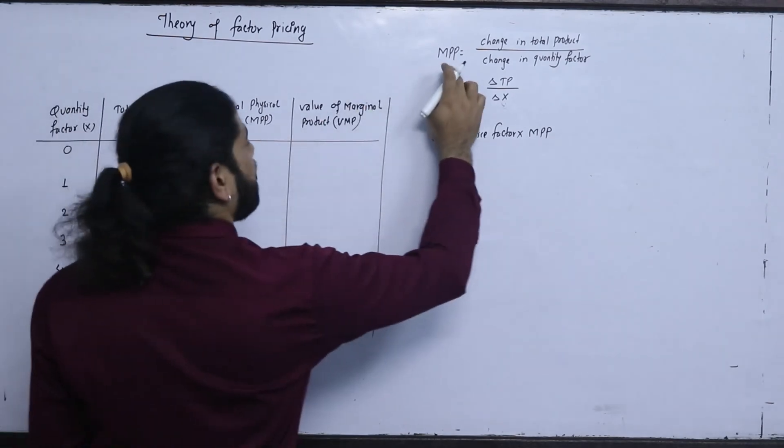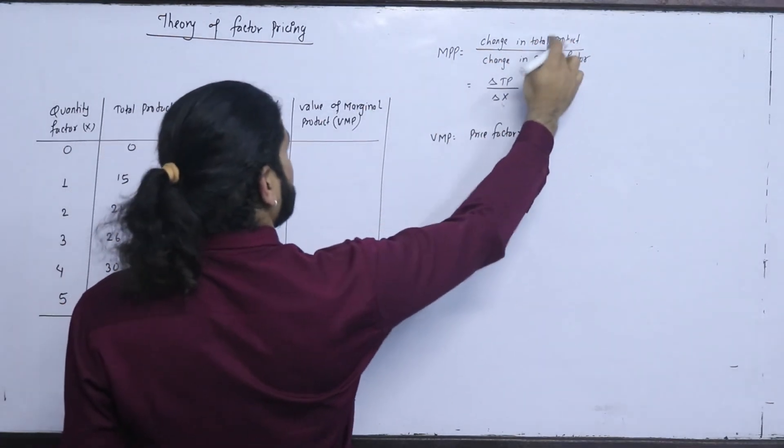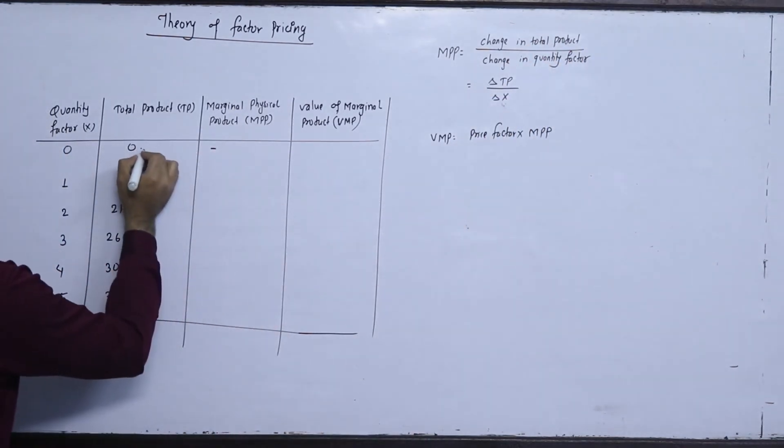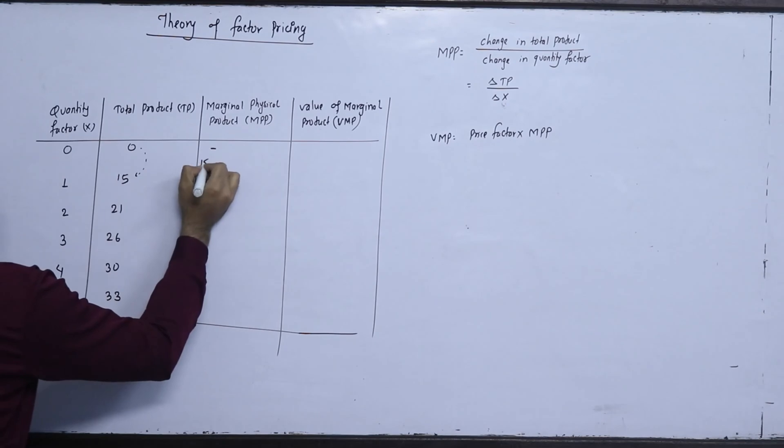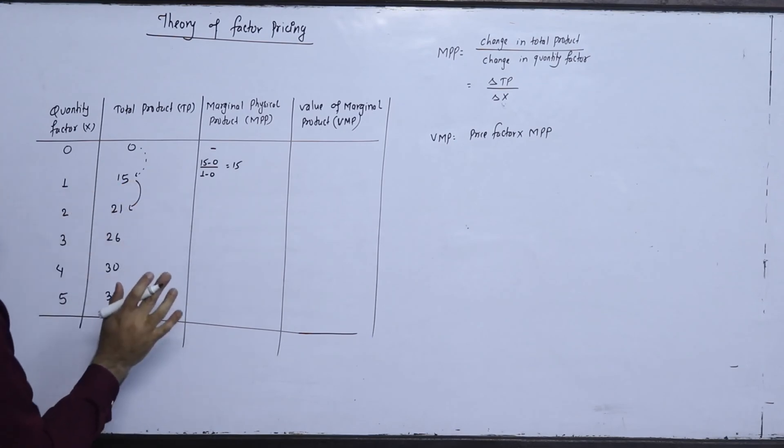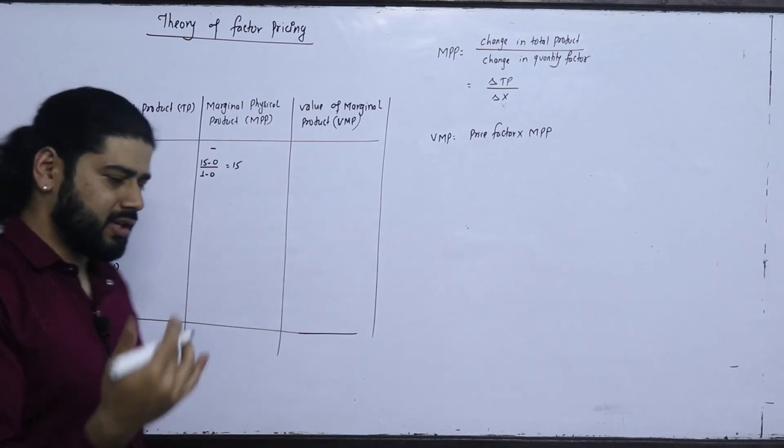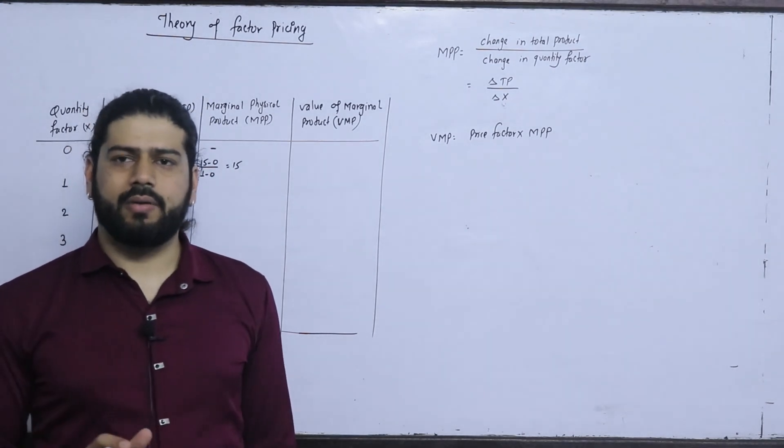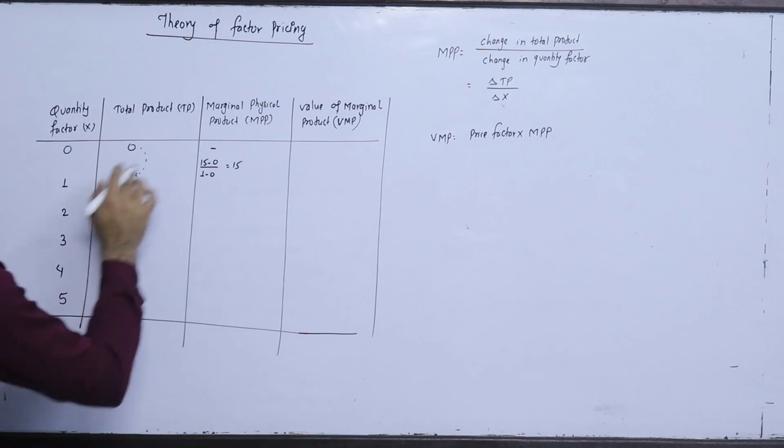Now, what will be the change? This means the total product divided by the change in quantity factor. Now, there is a change, the quantity factor is 1 minus 0. It is a change in the previous class. I suppose that the marginal cost, marginal revenue, marginal production, this is the same type. Marginal per unit change.